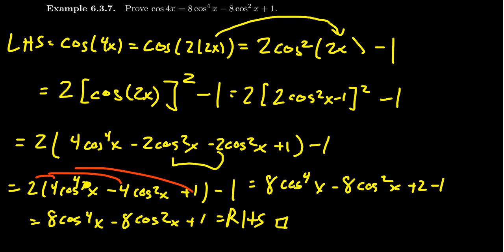We can use the double angle identity for cosine in all the settings where it might be appropriate. But with cosine, you have options: do you want only cosines, only sines, or both cosine squared and sine squared? Depending on the context, you'll make that decision.